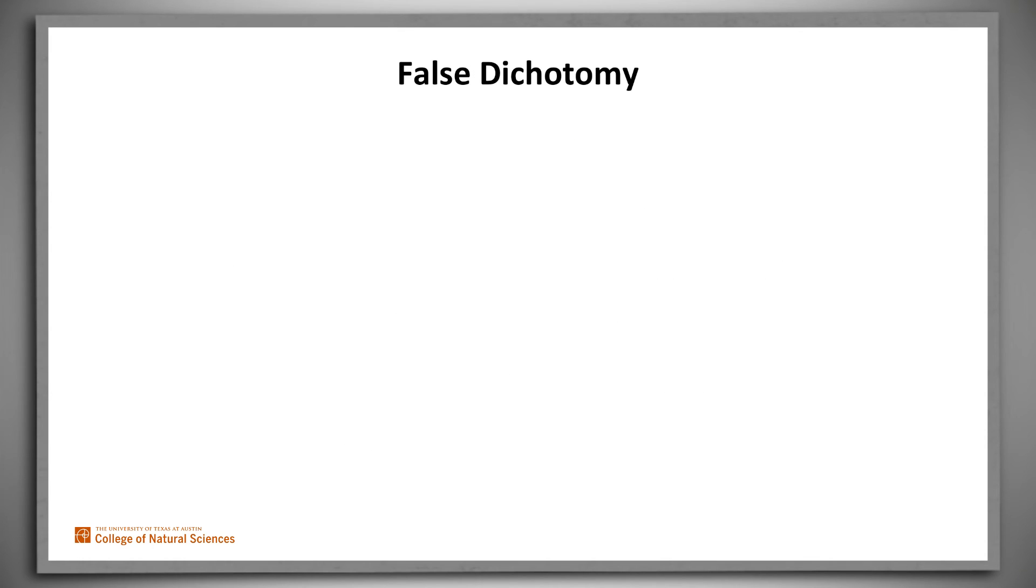While the Law of the Excluded Middle is a powerful proof tool, it's important to be careful to use it correctly. The Law of the Excluded Middle says that for any logical statement p, p or not p is true. It doesn't say that p or some q that may seem like not p must be true. If q is not exactly not p, then it's possible that there are more than two alternatives. Failure to recognize that can lead to the logical error called false dichotomy.